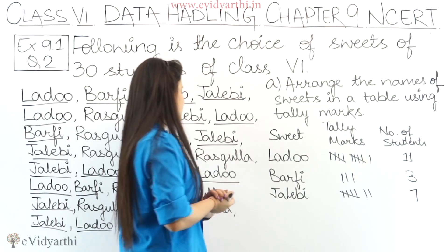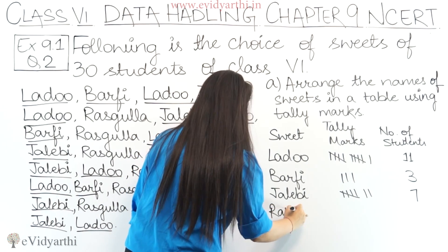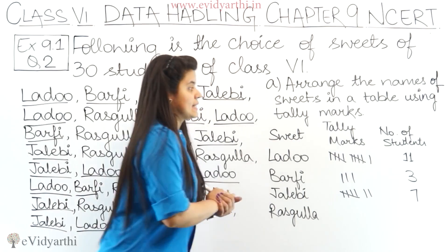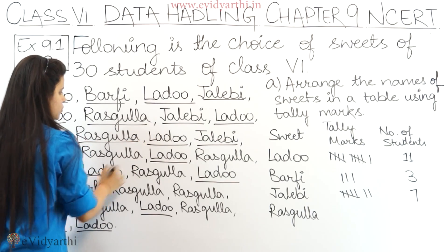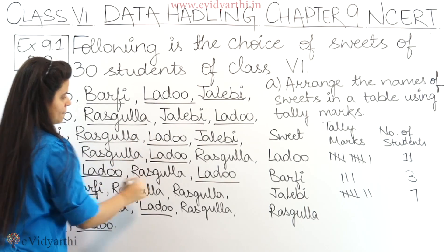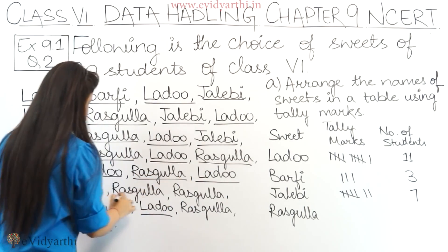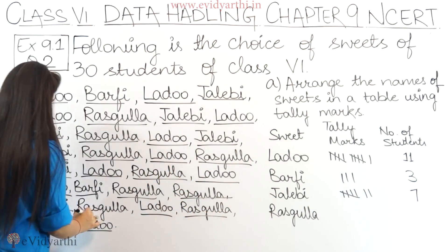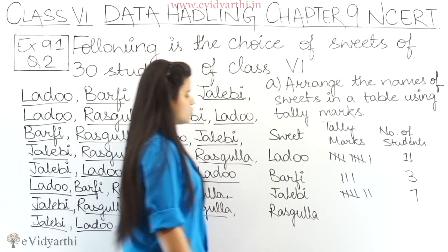Now let's count the last sweet — rasgulla. Let's count the number of students: 1, 2, 3, 4, 5, 6, 7, 8, 9. So we can see we have 9 students who like rasgulla.